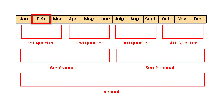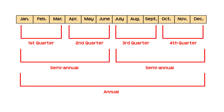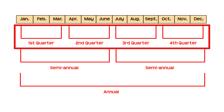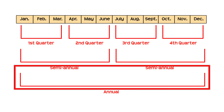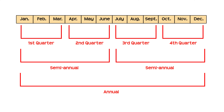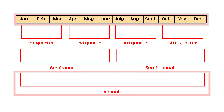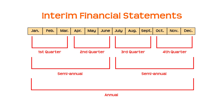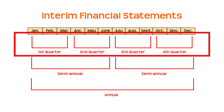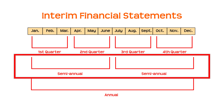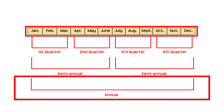It can be months, quarterly, semi-annual, or even a year. The graph shows various accounting periods: monthly, quarterly, semi-annually, and annually. Most organizations use a year as their primary accounting period. Organizations that prepare interim financial statements cover a shorter period — a month, a quarter, or a six-month period. When reports are prepared annually, it is called annual financial statements.